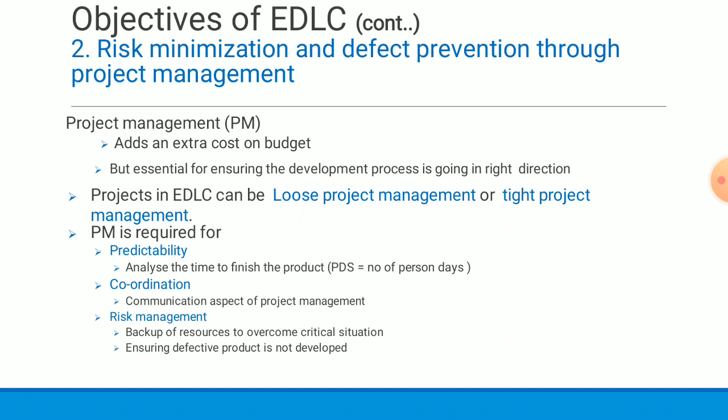Predictability involves estimating the number of persons and time required — for example, two persons over two weeks. The management team reaches this estimate based on past experience with similar projects or based on analysis of work summary data available for similar projects.